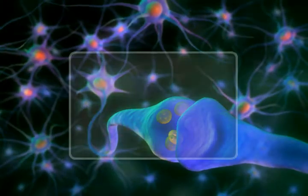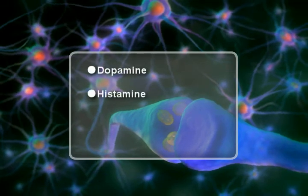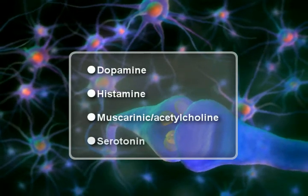The AP is modulated by dopamine, histamine, acetylcholine, and serotonin receptors.